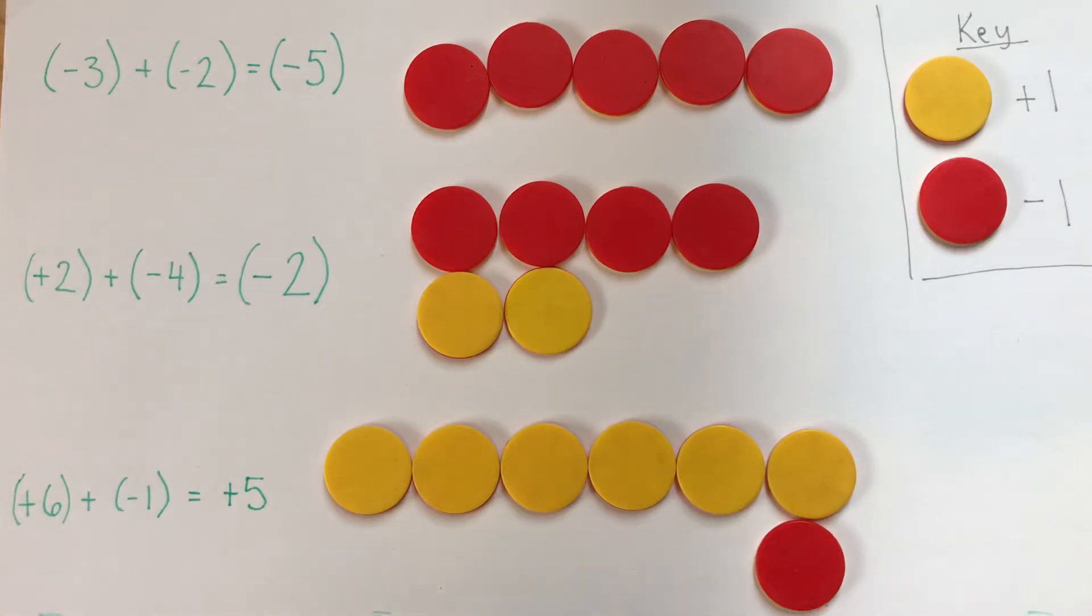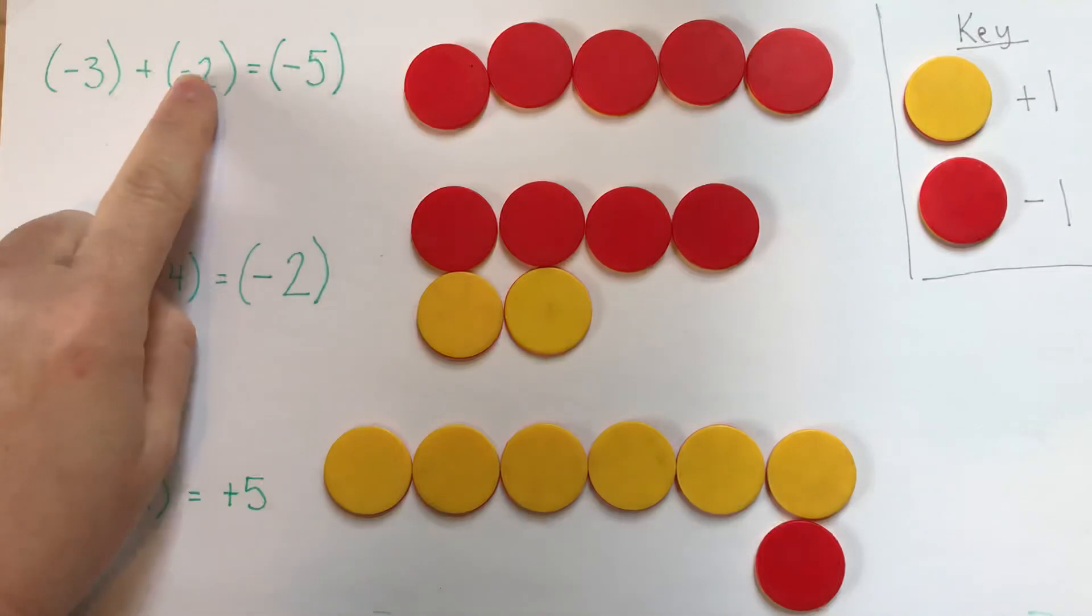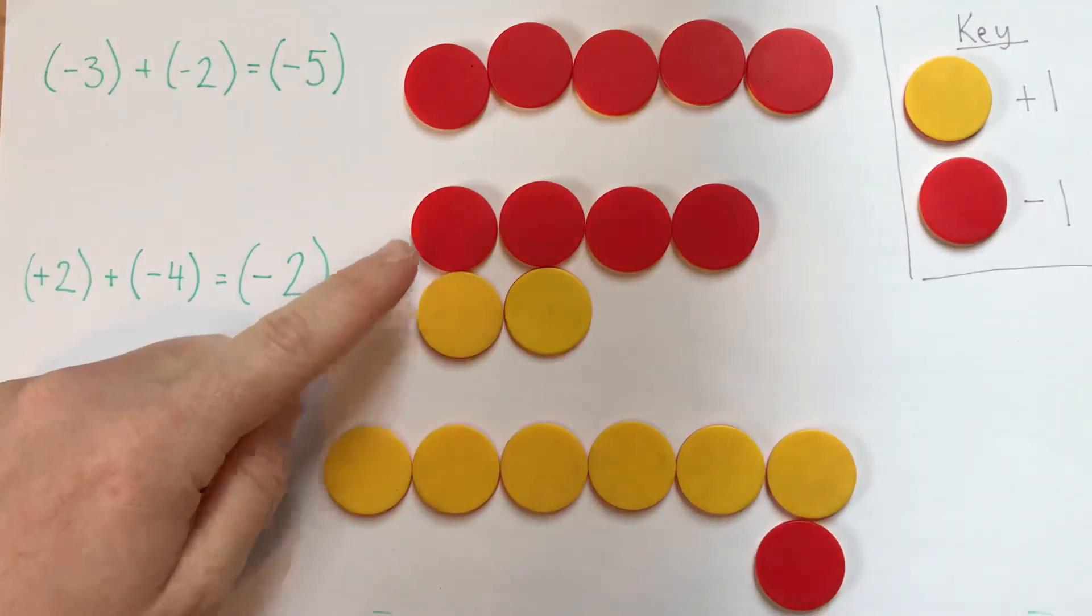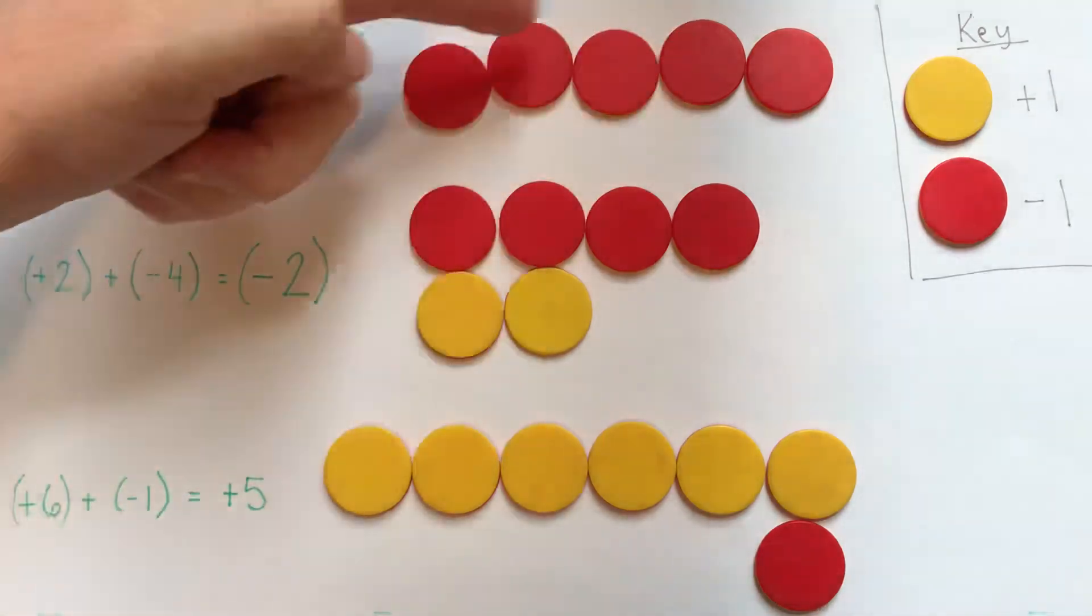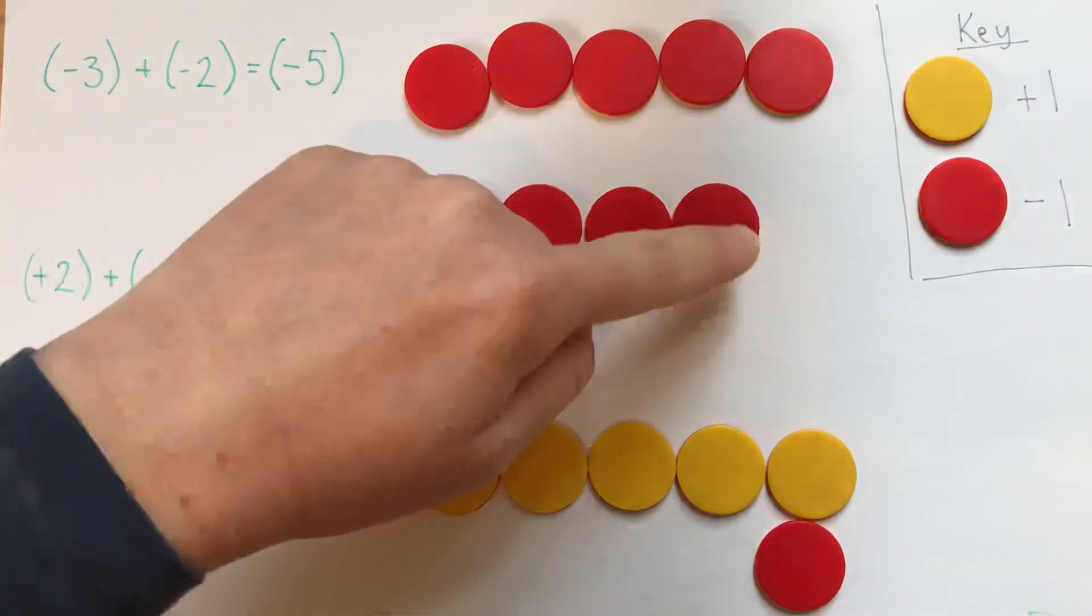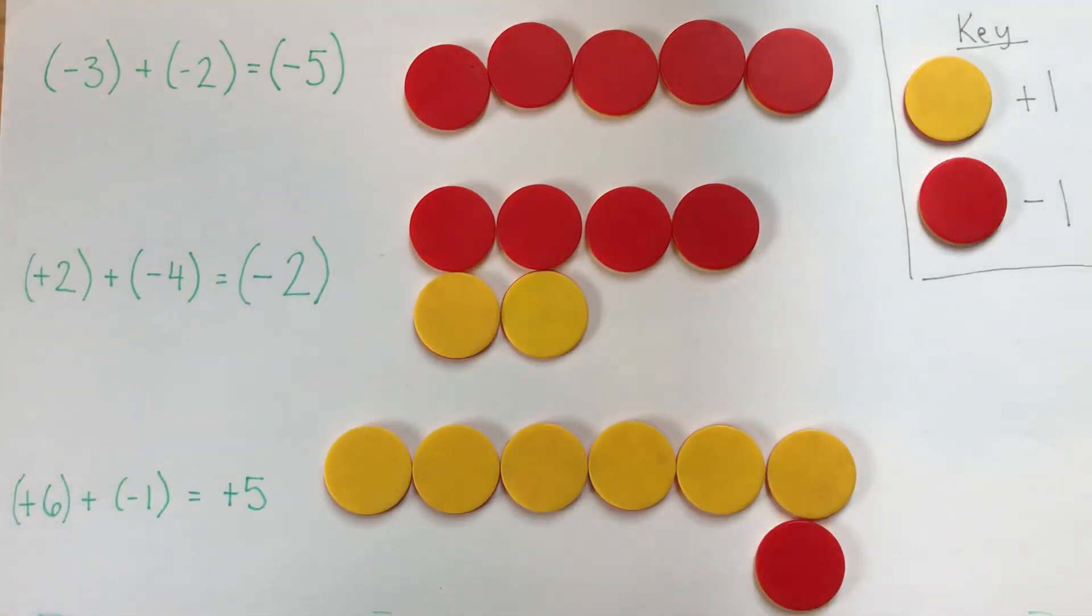To add integers, you represent each integer with the counters, then put them all together into one display. To read the number, you may or may not need to consider your zero pairs to decide what your final answer is. Thanks!